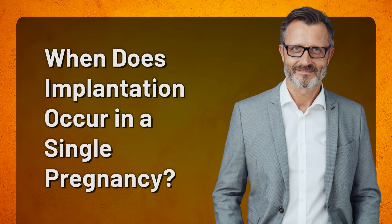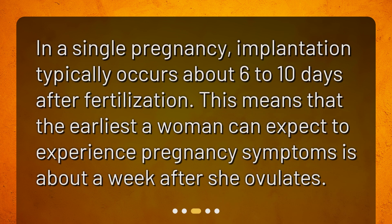When does implantation occur in a single pregnancy? In a single pregnancy, implantation typically occurs about 6 to 10 days after fertilization. This means that the earliest a woman can expect to experience pregnancy symptoms is about a week after she ovulates.